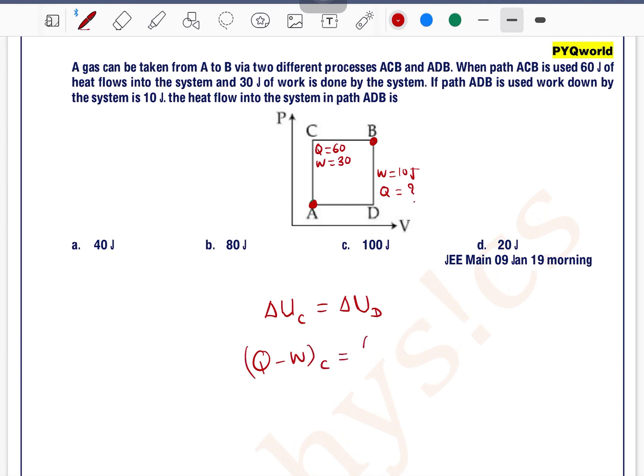From the first law of thermodynamics, we can write delta U equals Q minus W, and Q minus W for process D.